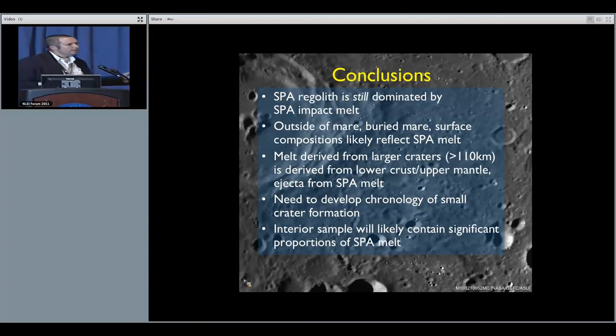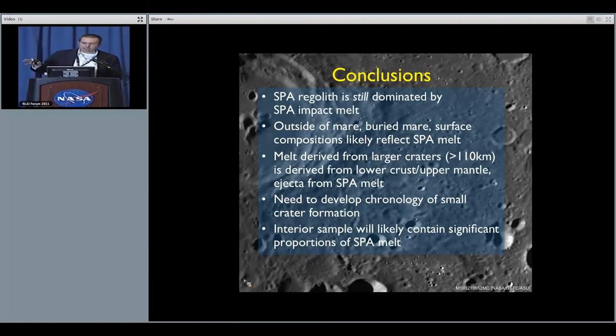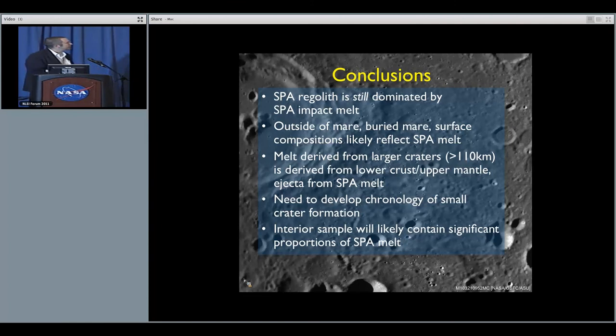I have some conclusions here. I think that in thinking about how small craters are our friends and helping out the cause of keeping SPA melt at the surface or whatever the basement might actually be, a lot of work still has to be done in assessing what's actually in the interior. But material is going to be there waiting for us to go sample. Thank you.